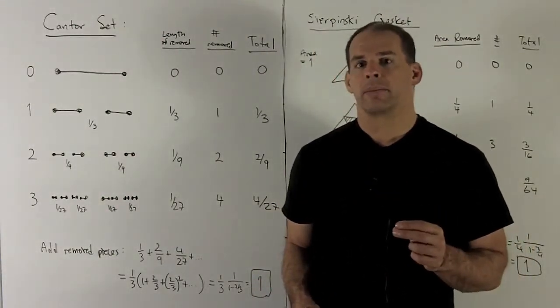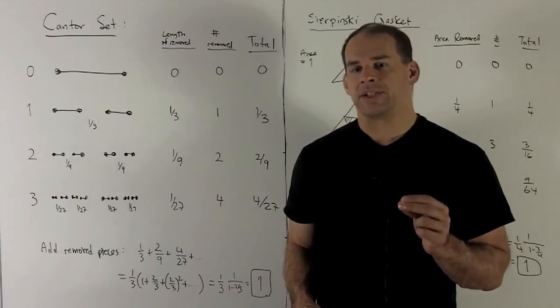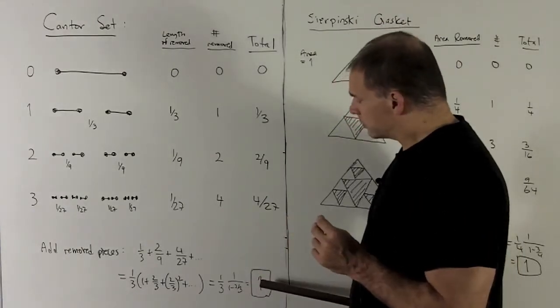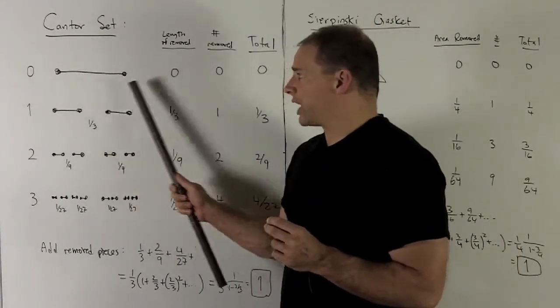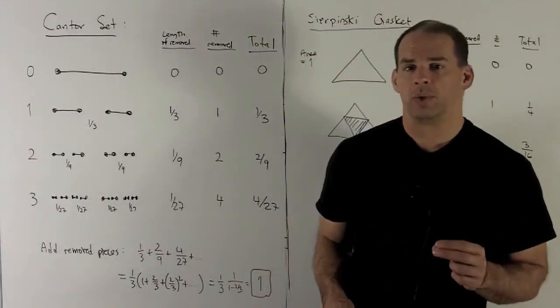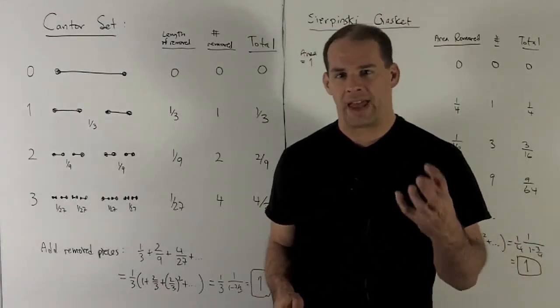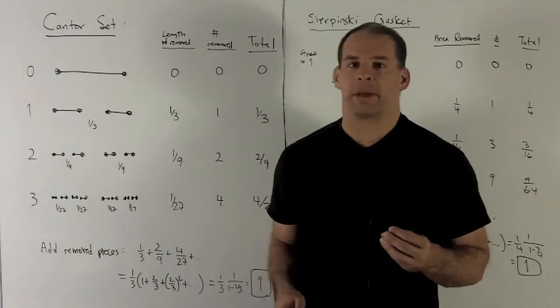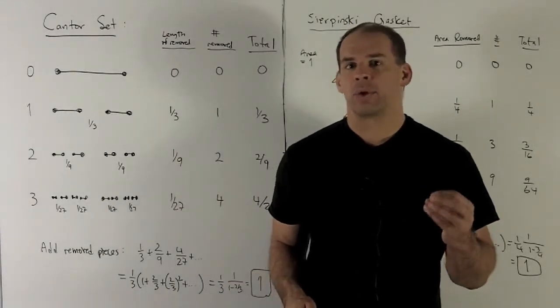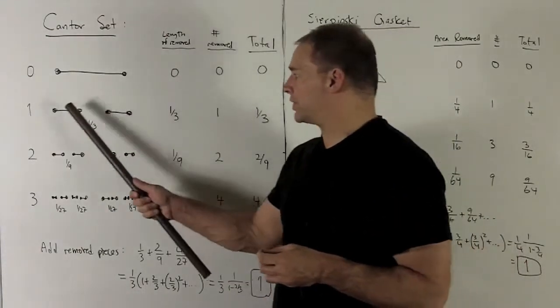The sum of the lengths of all those segments is equal to one. Problem with that is the length of the original segment is equal to one, which means somehow I've removed all the length from our original segment.